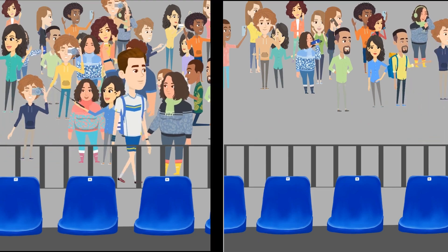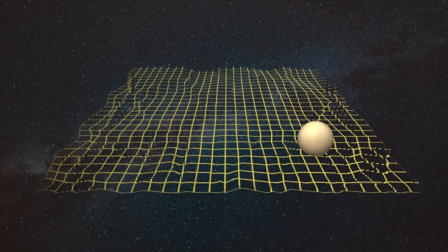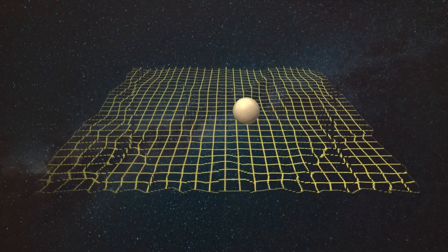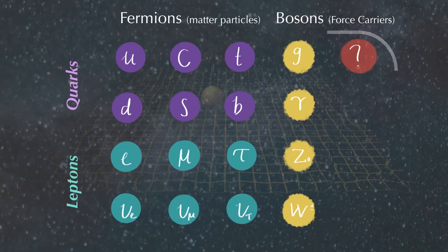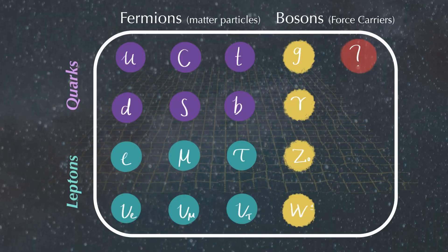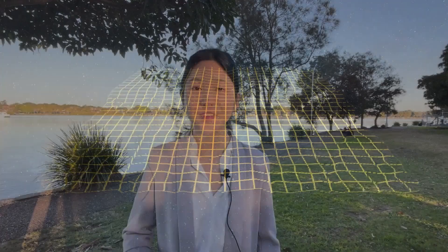This is exactly how the Higgs field interacts with each particle differently, resulting in their respective masses. The Higgs particle was actually discovered at CERN in 2012, which allowed us to take a major breakthrough step in finally piecing together the deepest secrets of the universe.